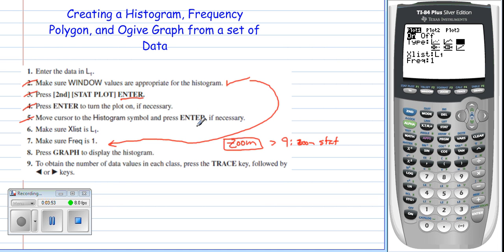Number five is complete. Number six, make sure that your X list is L1. Well, for a more advanced user, I can actually change that to a different list. We don't need to worry about that right now. We put our information in L1. That's where we want it to come from. Frequency, I'm not going to say anything about this. But number seven, just make sure your frequency is on one. Should be if you have default settings.